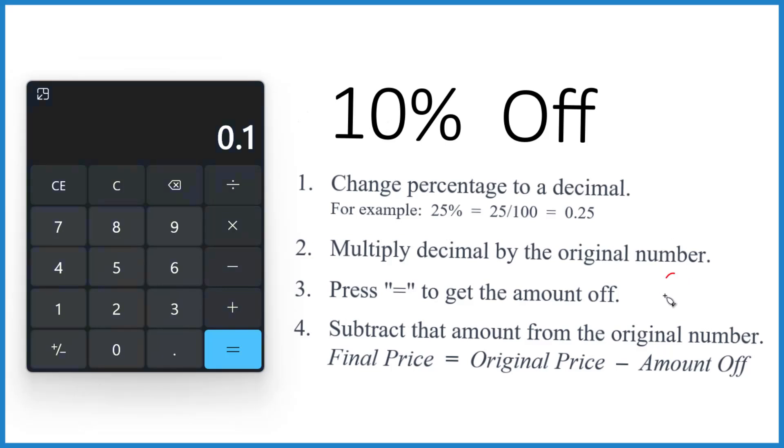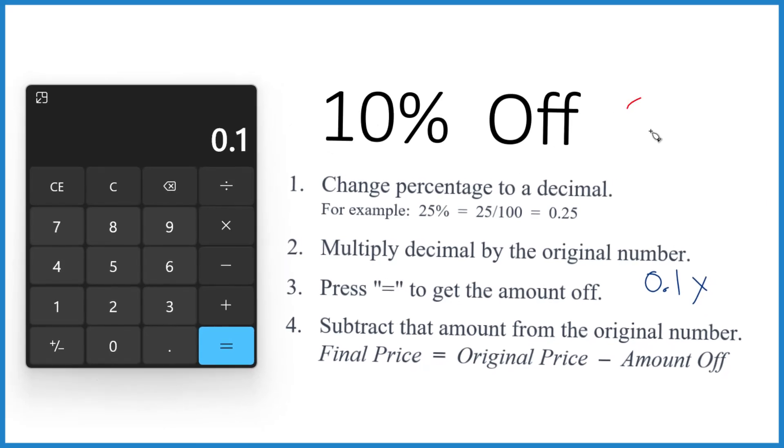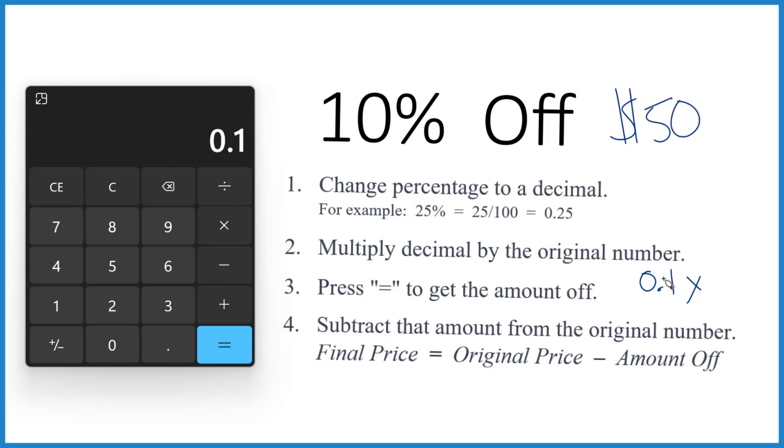So we have 0.1, that's our decimal, and then we multiply that by our original number. So let's say we're taking 10% off $50. We multiply our decimal, 0.1 times 50. So 0.1 times 50, you get $5.